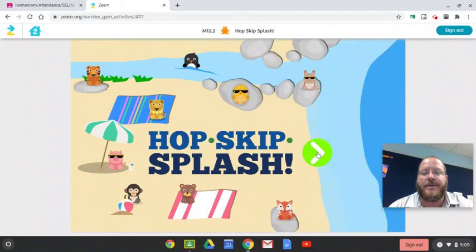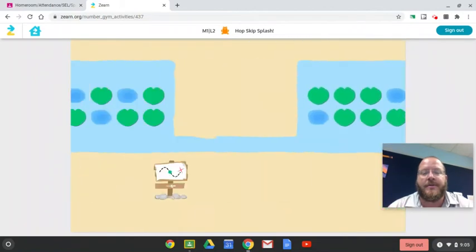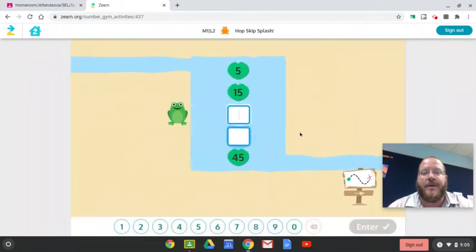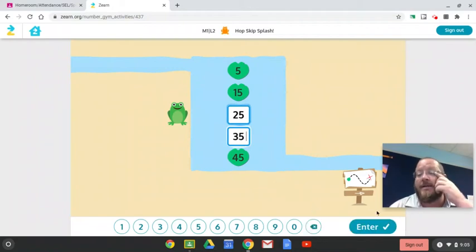Hop, skip, splash. 5, 15, looks like 25, and then 35. Going up by 10s.